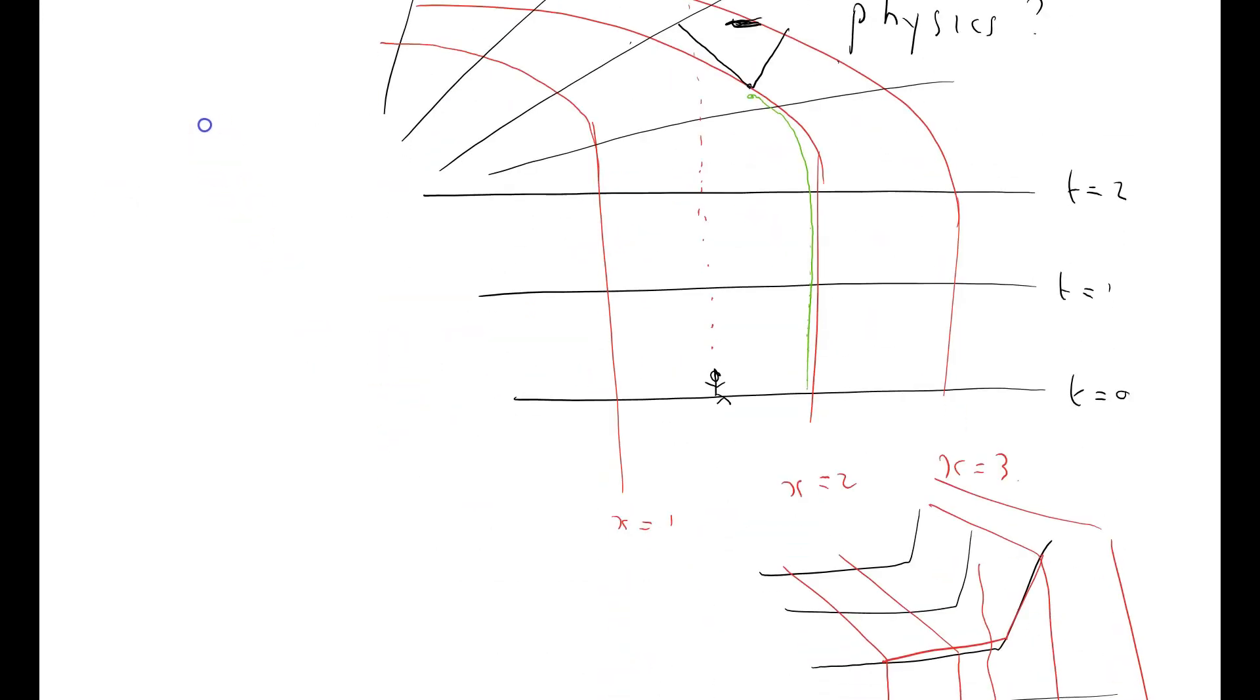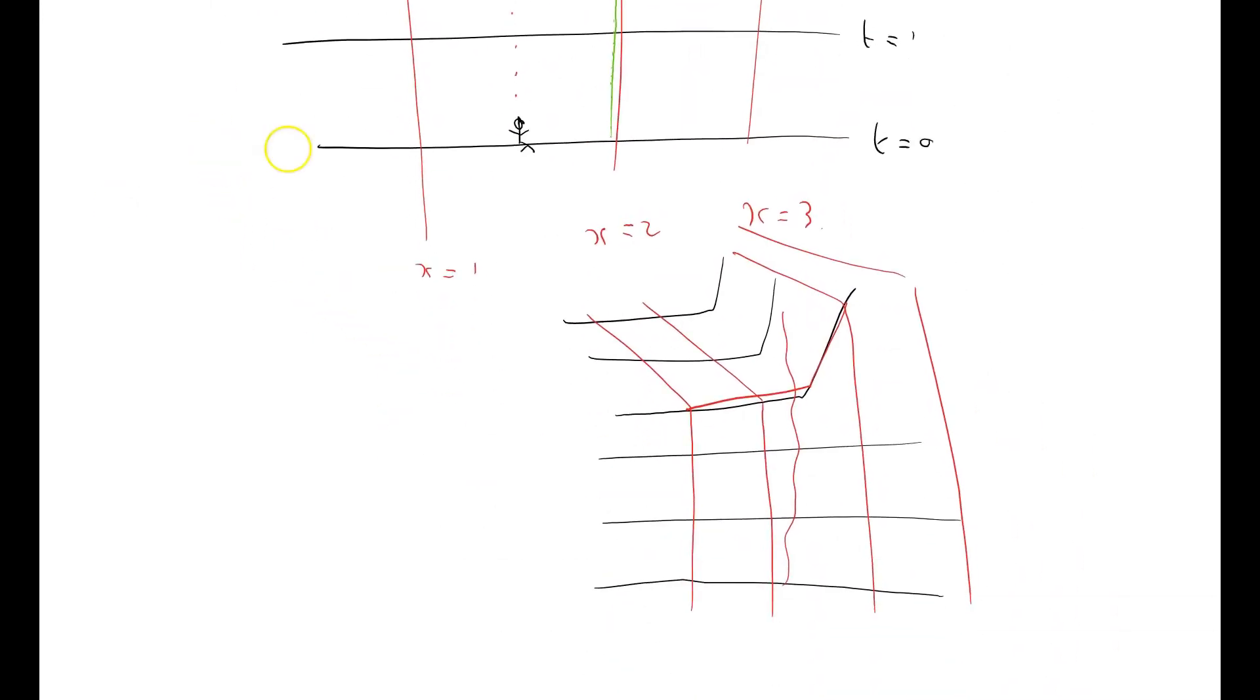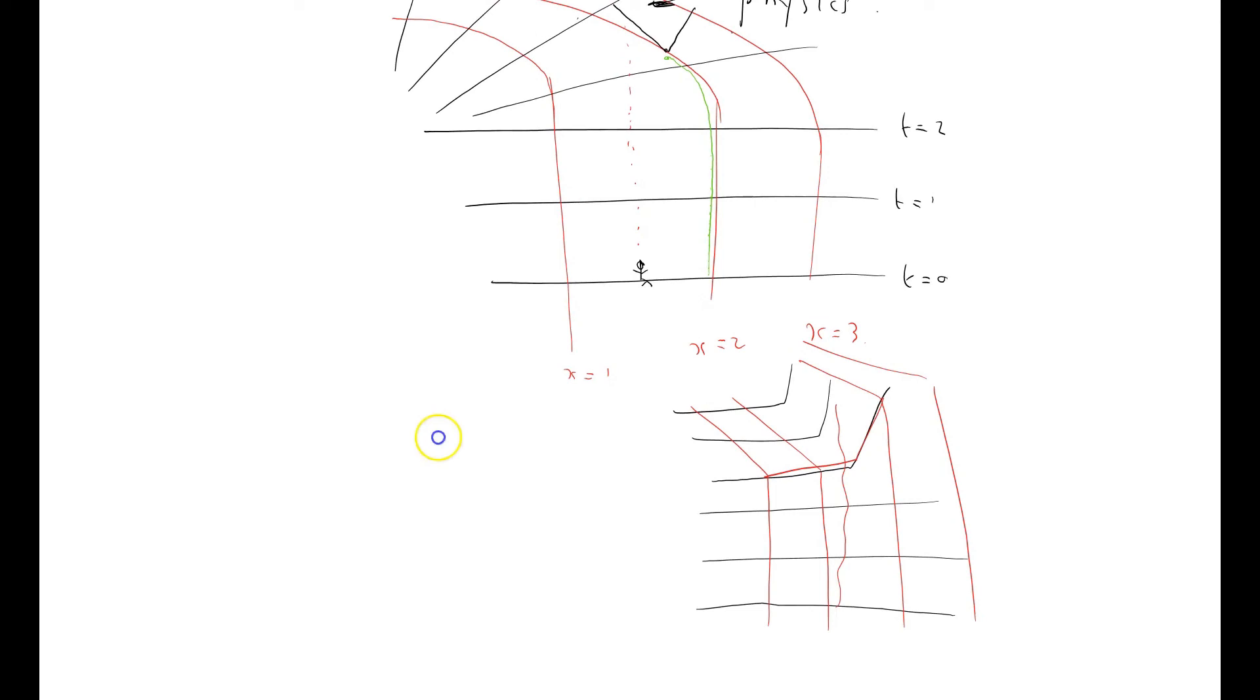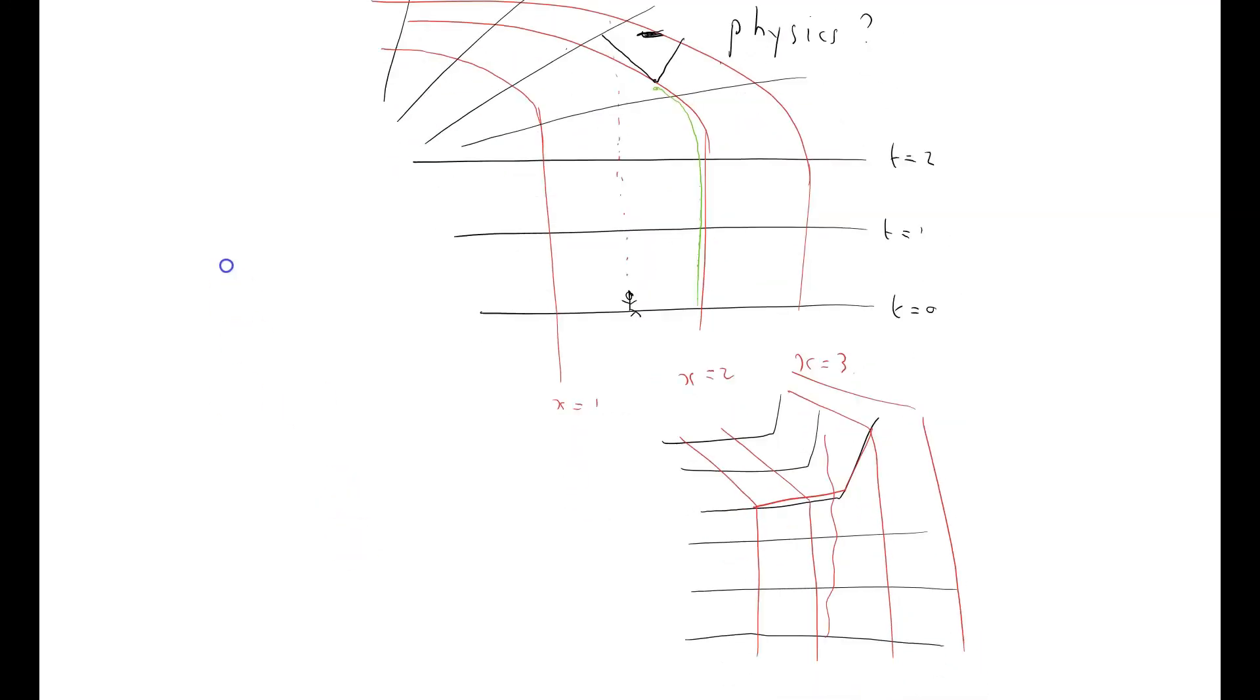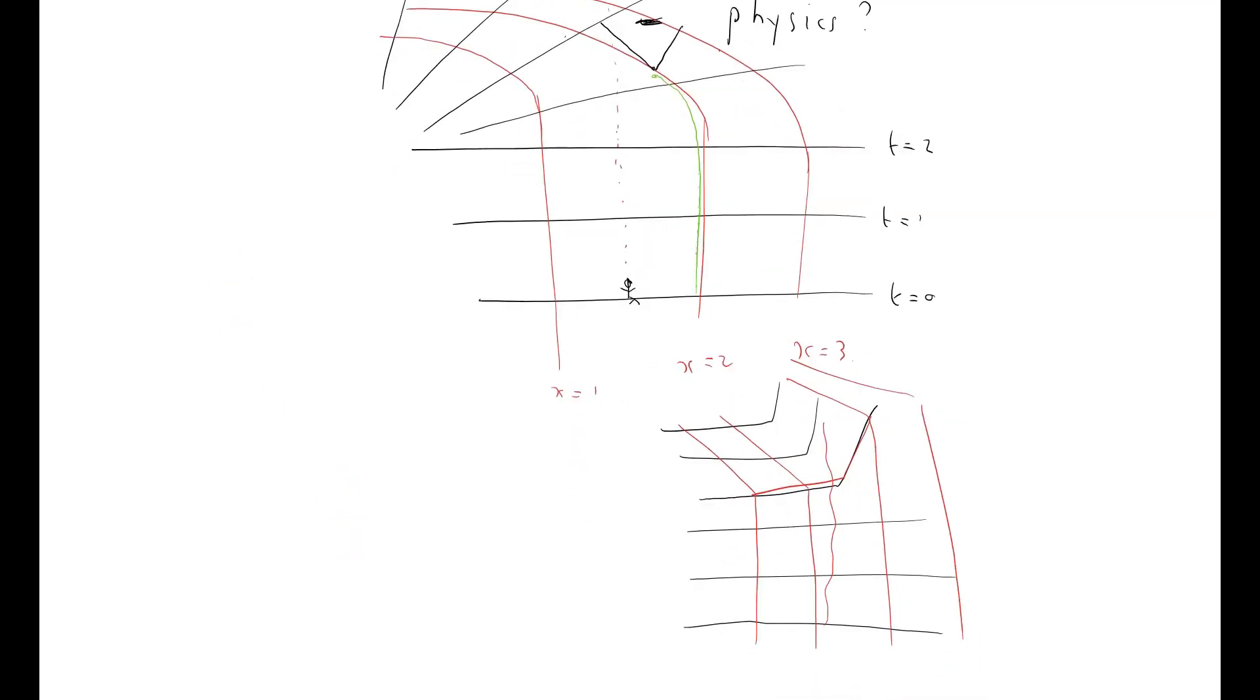OK, I'm going to stop there. What I've done is to show you some examples of coordinate systems that have got poor properties in certain regions of space-time. And we'll see that that's the case for the Schwarzschild system.